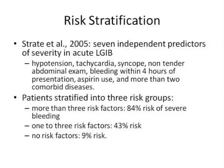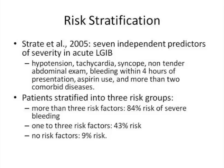Strate in 2005 described seven independent predictors of severity in acute lower GI bleed: hypotension, tachycardia, syncope, non-tender abdominal exam, bleeding within four hours of presentation, use of aspirin, and more than two comorbid diseases. Patients can be stratified into three risk groups. More than three risk factors: 84% risk of severe bleeding. One to three risk factors: 43% risk. No risk factors: 9% risk. This gives you an idea of what to look for when you are consulted for these patients.